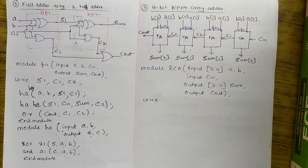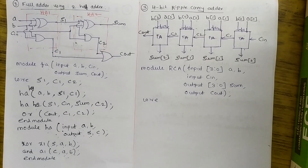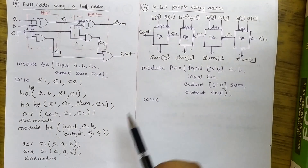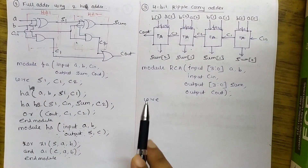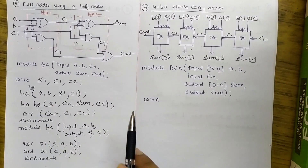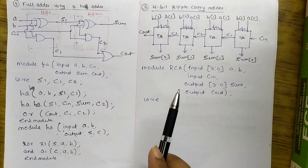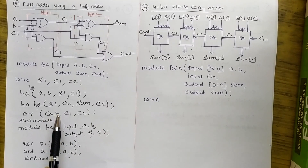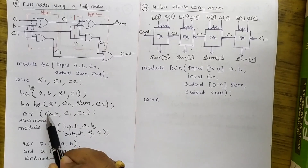Welcome friends. Last session we discussed the full adder example using two half adders. Now we'll continue with a 4-bit ripple carry adder, wherein the full adder acts as a component. In the last session we used ordered instantiation.